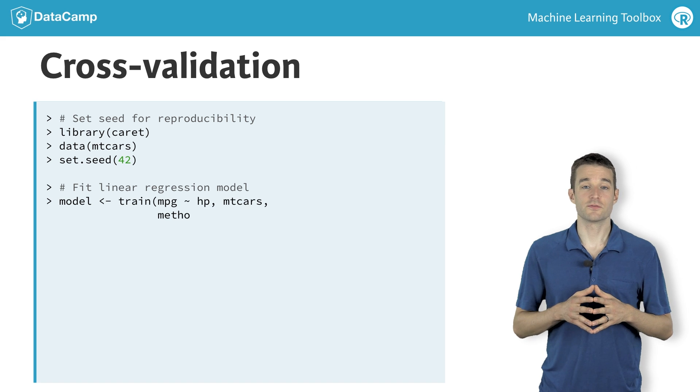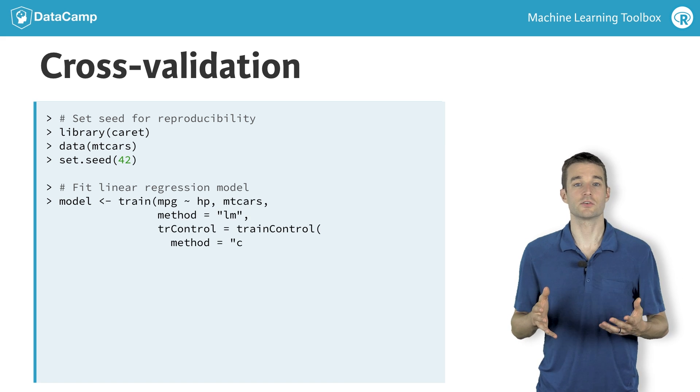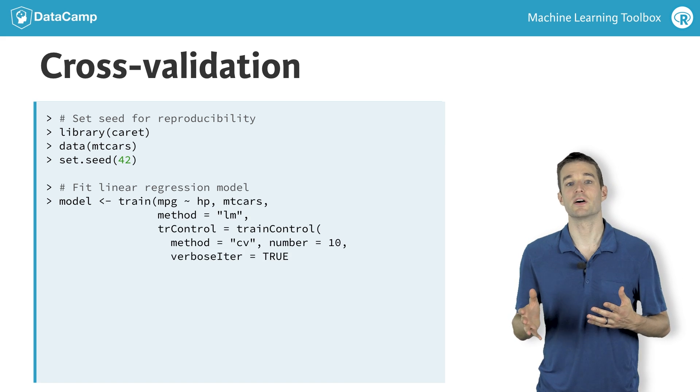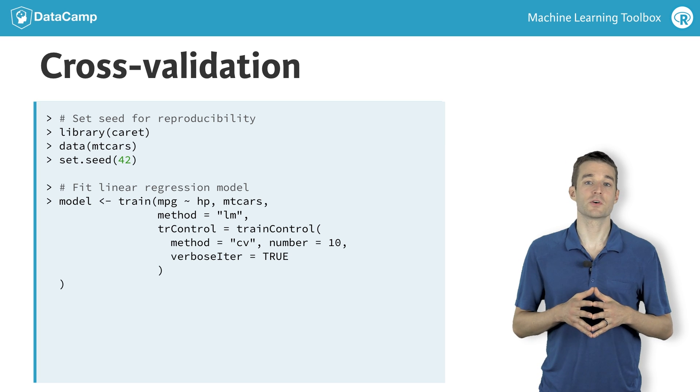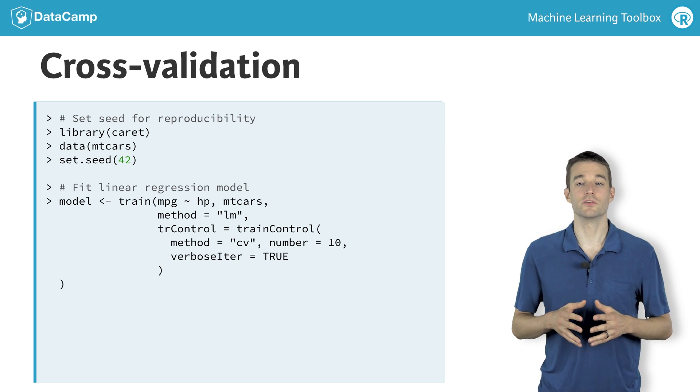The train function has a formula interface, which is identical to the formula interface for the lm function in base R. However, it supports fitting hundreds of different models, which are easily specified with the method argument.